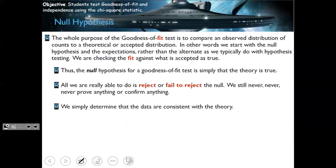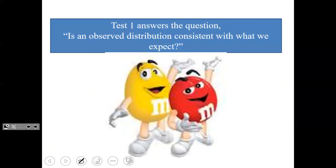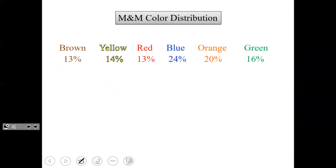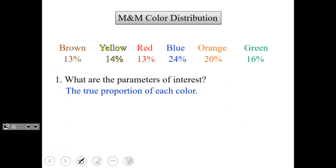Let's try the example we did in class with M&Ms. Is an observed distribution consistent with what we expected? The Mars company said 13% of M&Ms are brown, 14% yellow, 13% red, 24% blue, 20% orange, and 16% green. We each had bags of M&Ms, counted our samples, and collectively gathered data. The parameter of interest is the true proportion of each color.